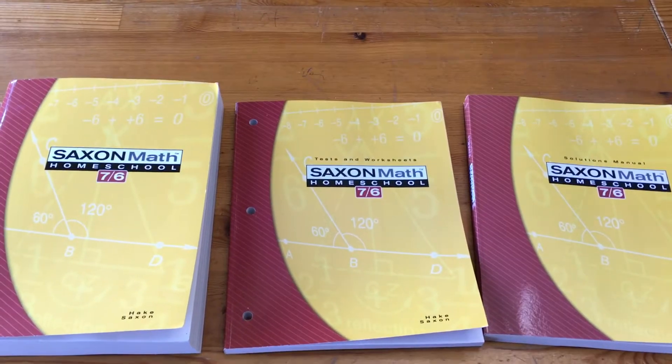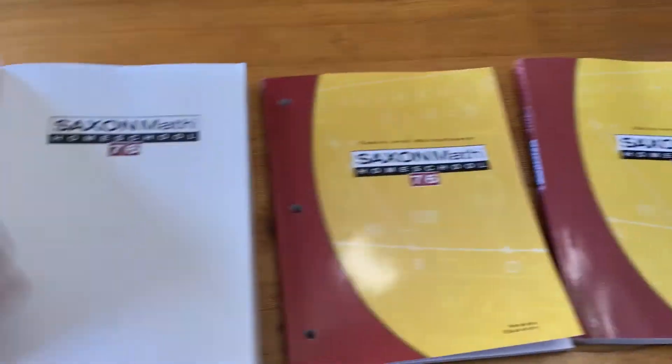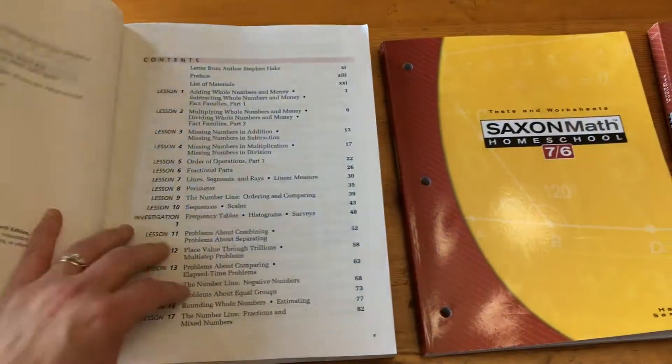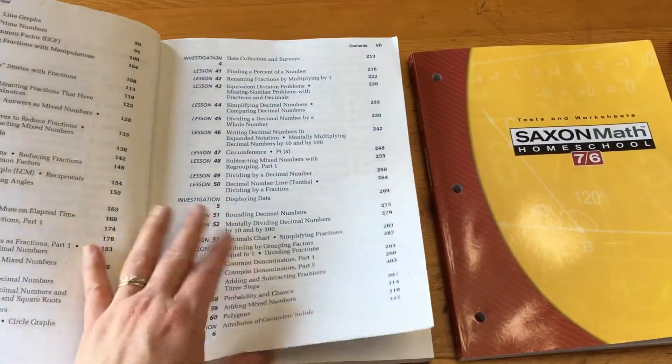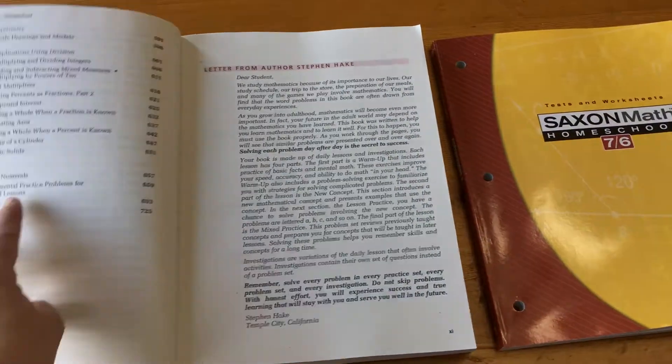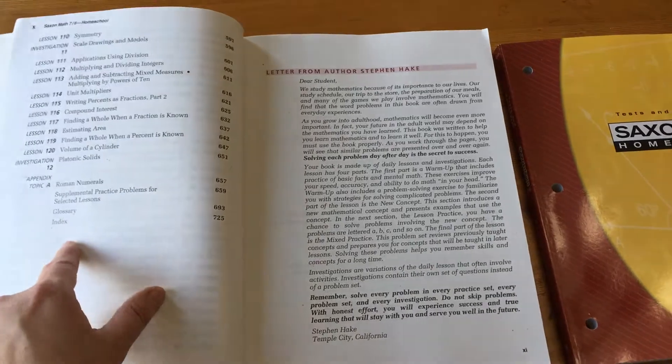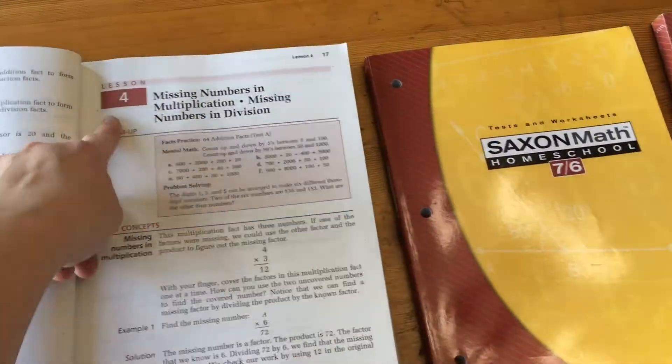So here is the 7-6. And again, same format, same layout. There's 120 lessons, 12 investigations. And it lists them all here. And then this one only has one Roman numerals. And then there's a supplementary practice, the glossary, the index, set up exactly the same way.